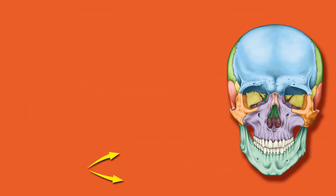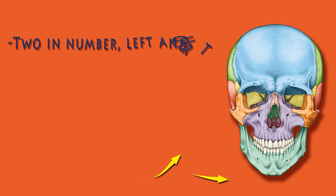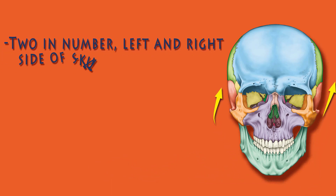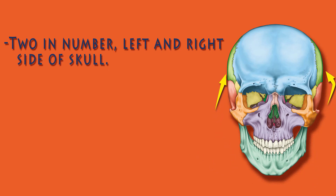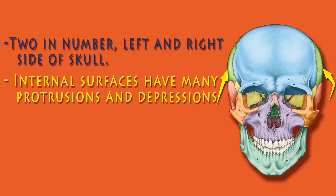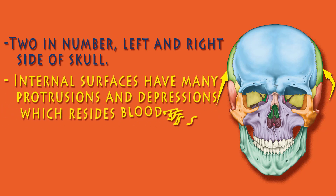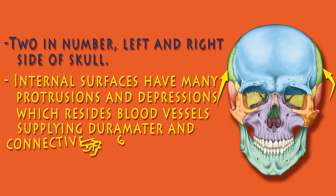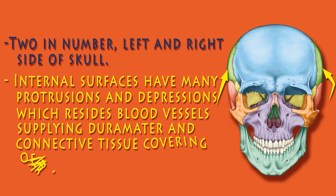The parietal bones are two in number, present on the left and right sides. They form the larger part of the sides and roof of the cranial cavity. Their internal surfaces have many protrusions and depressions which house blood vessels supplying the dura mater and connective tissue covering of the brain.